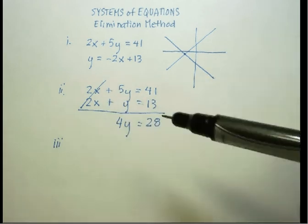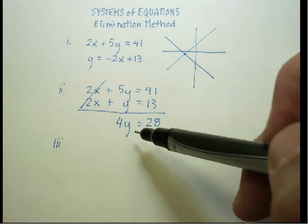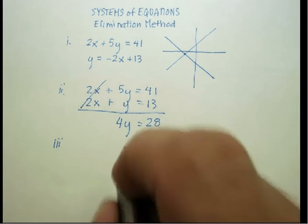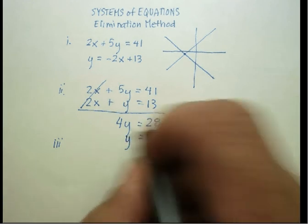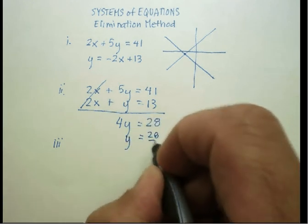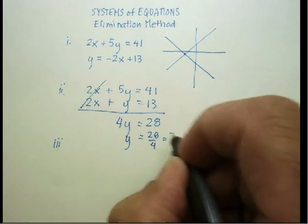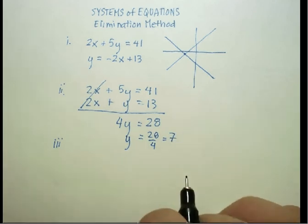So look what I've done there. I'm able to eliminate one of the variables and now I can solve for the missing variable. In this case, the y. y is equal to 28 over 4, which is equal to 7.